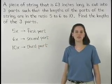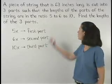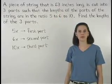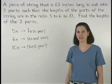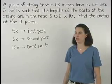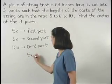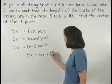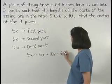Now, since we know that the original piece of string was 63 inches long, our three parts must add to 63 inches. So we can set up the equation 5x plus 6x plus 10x equals 63.